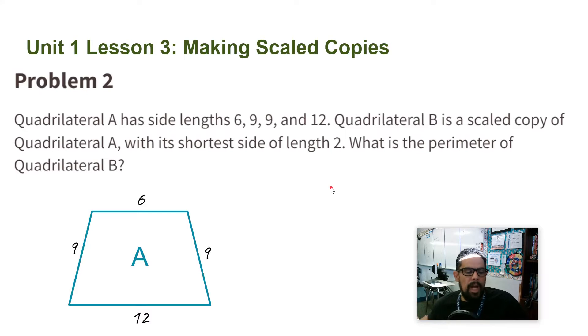Quadrilateral B is a scaled copy of quadrilateral A with its shortest side of length 2. So in quadrilateral A, this top side 6 is the shortest side. So when I do my scale copy, 2 is going to be the shortest side that corresponds there with that one.